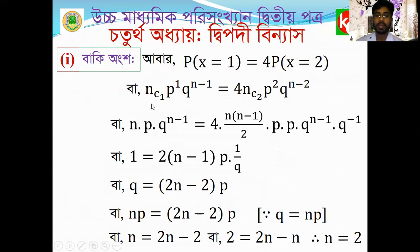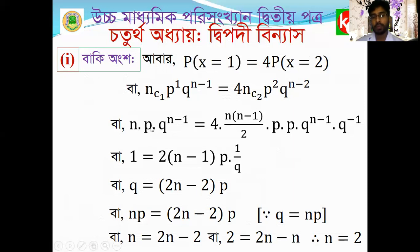For x equal to 2, the left-hand side is nC1 * p^1 * q^(n-1). The next term is nC2 * p^2 * q^(n-2). We see that nC1 means n, p^1 means p, and q^(n-1) remains. But nC2 is n*(n-1) divided by 2.